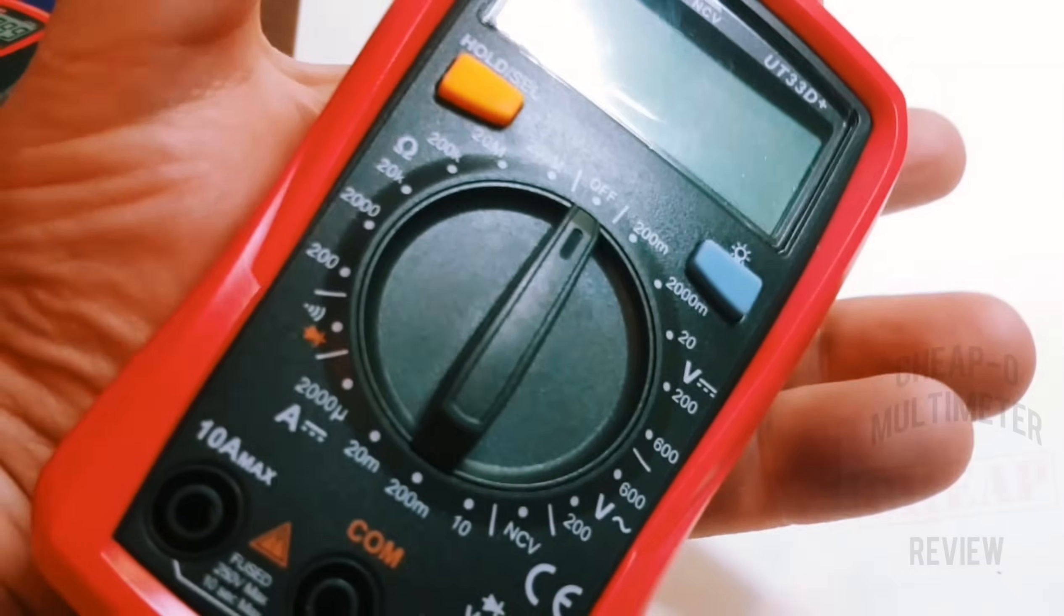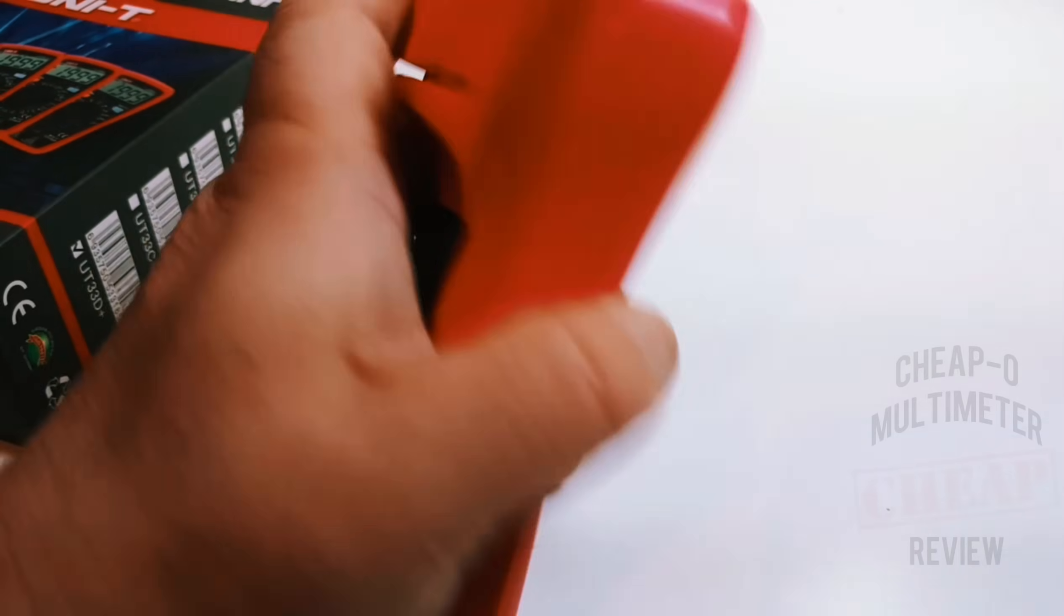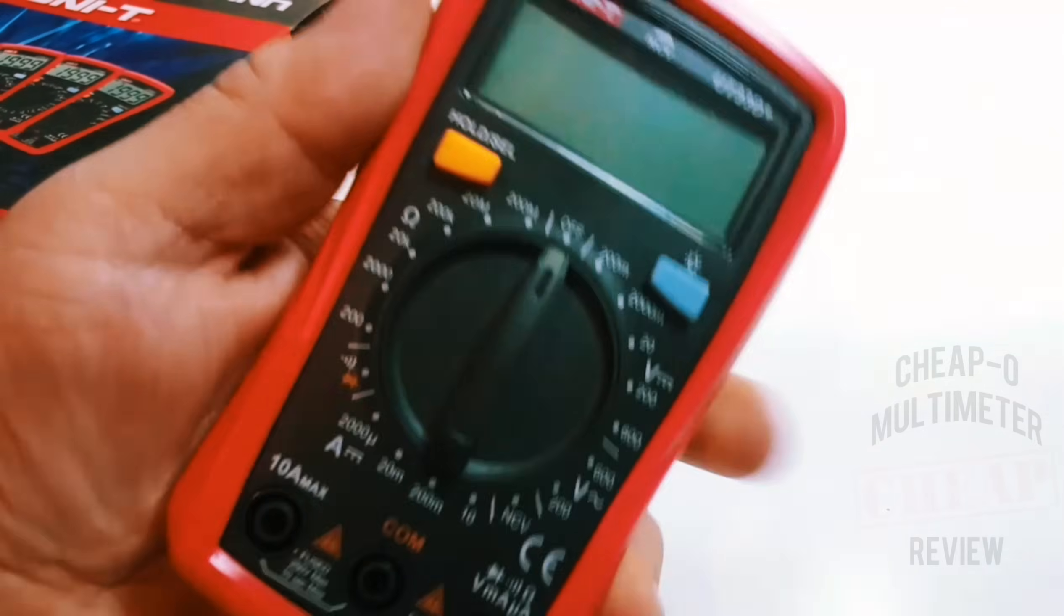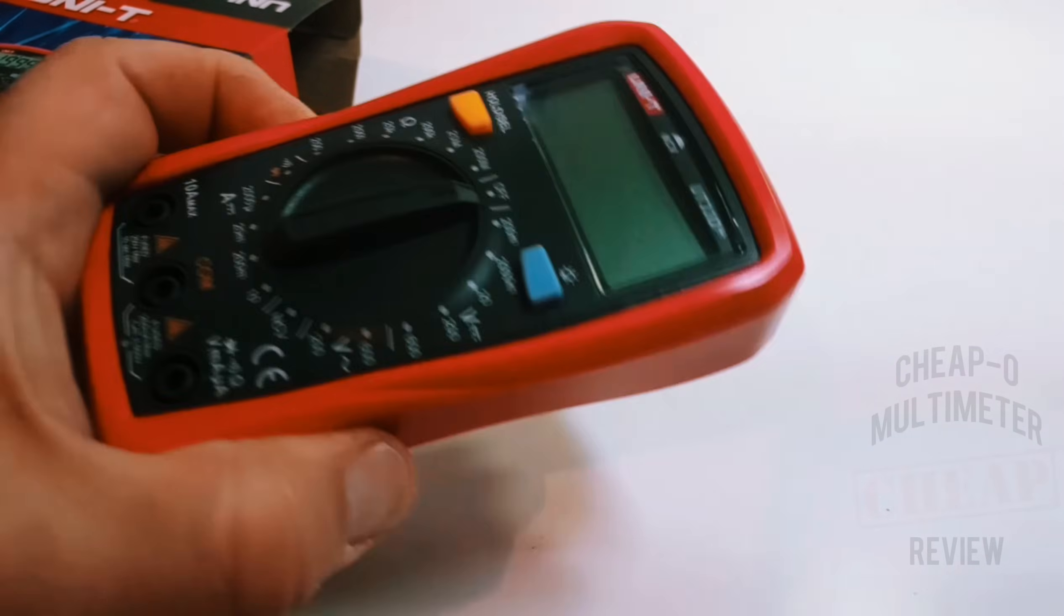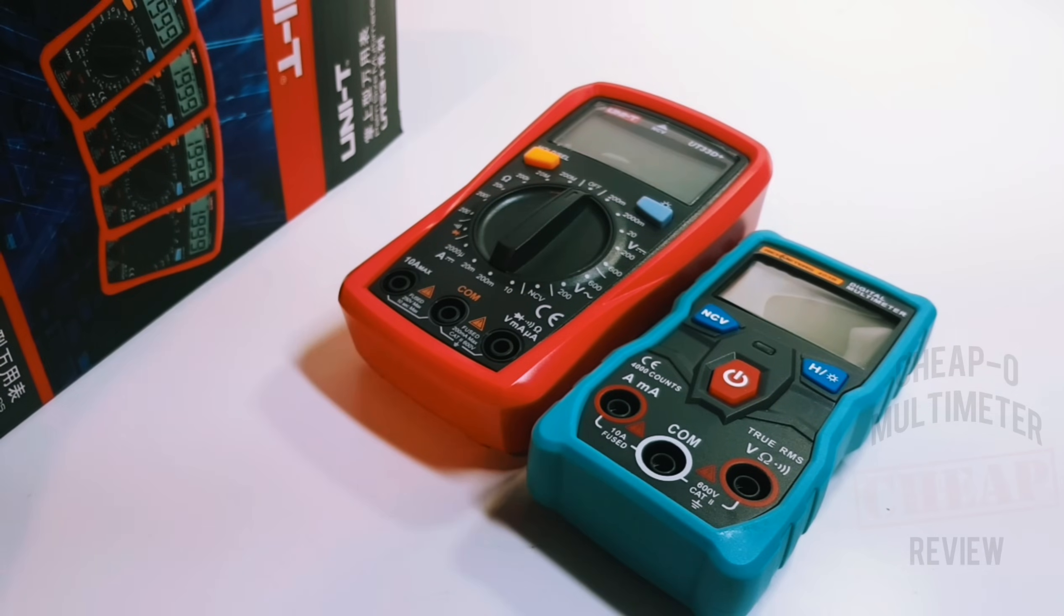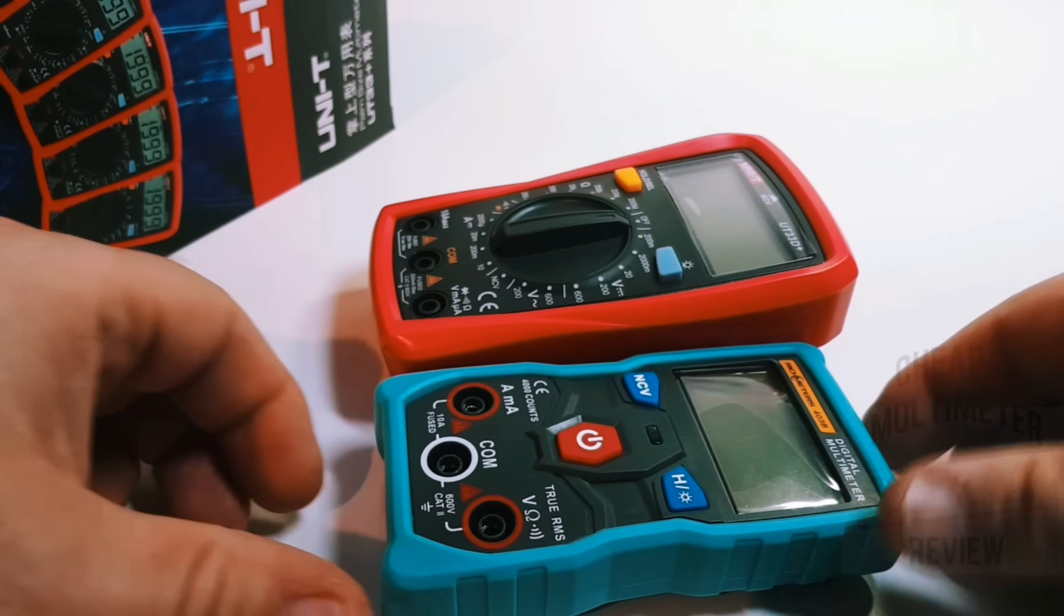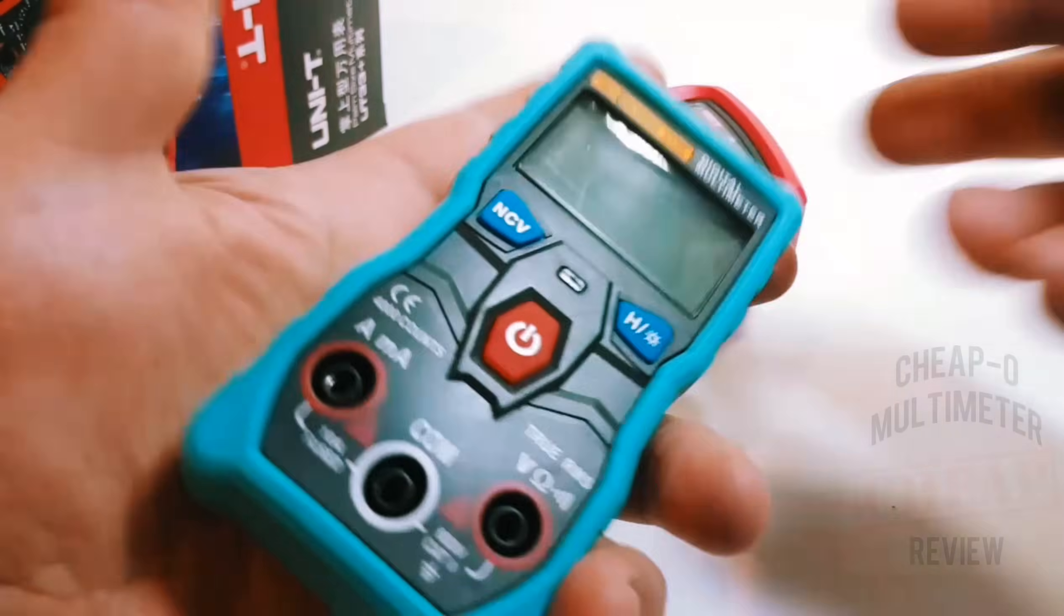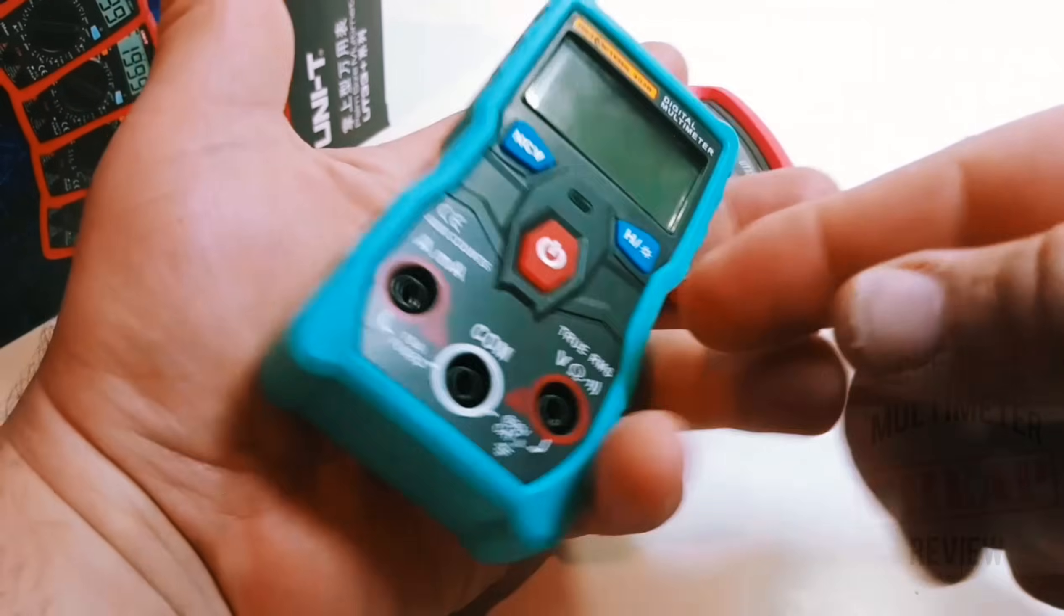I think it's a little bit bigger than palm size, maybe hand size. I don't know, definitely not palm size. It's not big though, but it's definitely not small either. Now I would call this Richmeters definitely a palm size meter, and you can tell there's quite a difference in size here.